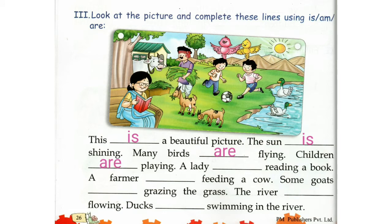A lady. How many ladies do you see in the picture? Only one. So which helping verb should we use? Is. A lady is reading a book.